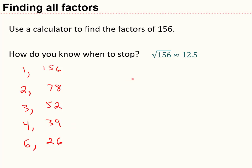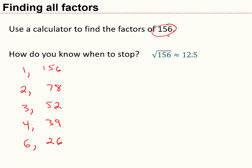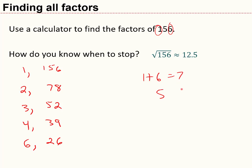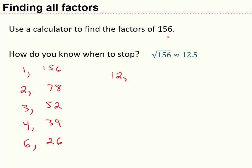Is 9 a factor? The digit sum is 12, and 12 is not divisible by 9, so no. Is 10 a factor? No. Is 11 a factor? Adding 1 plus 6 gives 7, and the other digit is 5; 7 minus 5 equals 2, not divisible by 11, so no. Is 12 a factor? Since both 3 and 4 are factors of 156, 12 must be also; 156 divided by 12 equals 13.